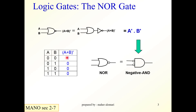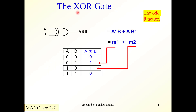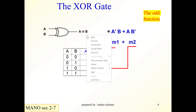The exclusive OR gate is a different gate. Its symbol is like an OR gate with an extra arc added. The output is written as A XOR B.